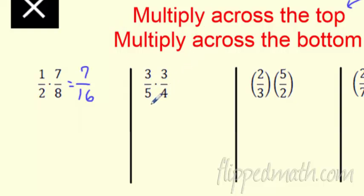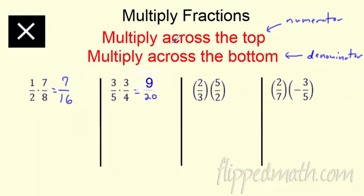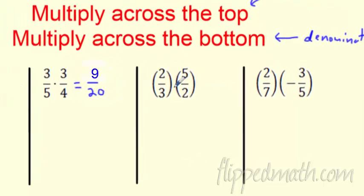Let's go again. Three fifths times three fourths: multiply across the top, three times three is nine; multiply across the bottom, five times four is 20. Rock and roll. We're going to throw in parentheses — remember, this means multiplication. Same thing though: don't worry about common denominator. Two times five is 10, and on the bottom three times two is six. This one's a little more work — we've got to reduce it.